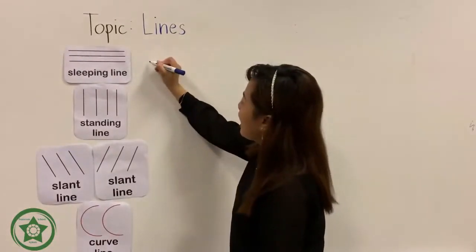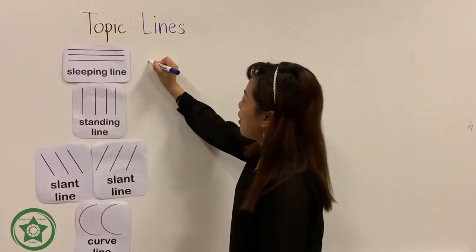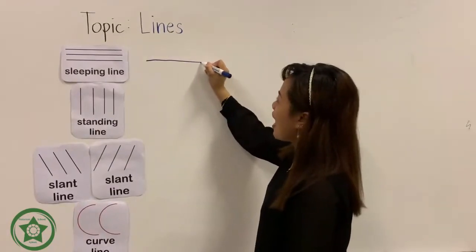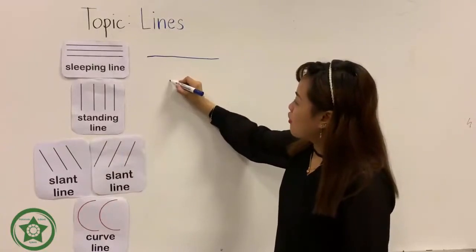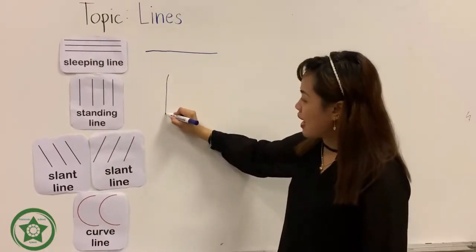Sleeping line, it goes from left to right. And standing line, from up going down.